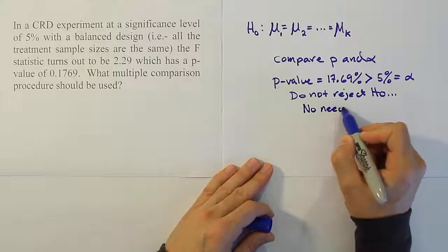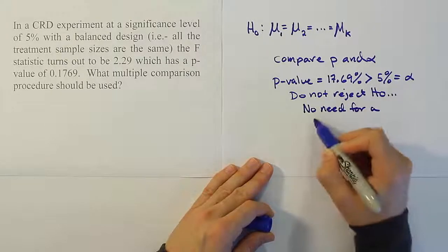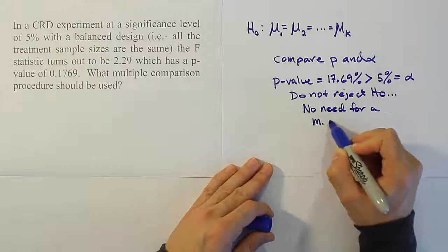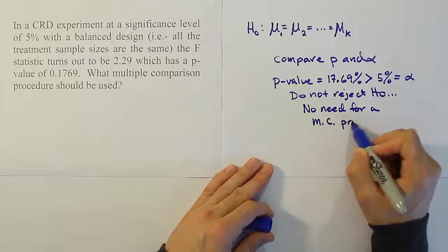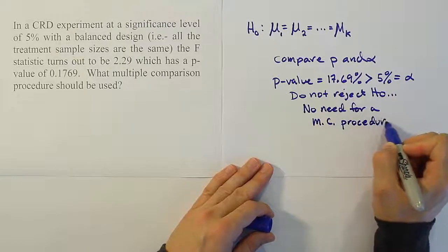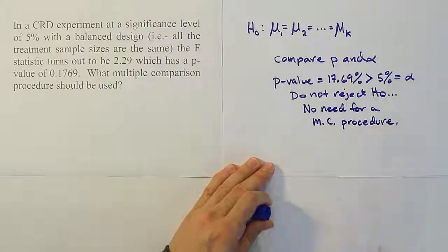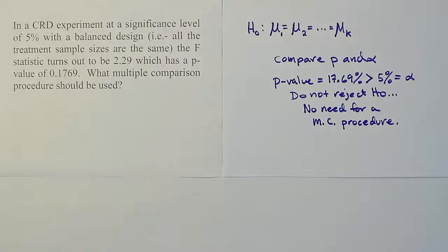So, no need for a multiple comparison procedure. At this point, the question asks what multiple comparison procedures should be used — and the answer is: none. None of them should be used.